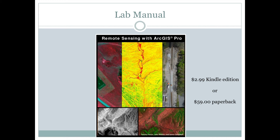If, however, you're comfortable working with a digital edition of this lab manual — which has the exact same material in it — a less expensive and easy way to access that is to go to Amazon.com and download a Kindle edition of this book for $2.99. It is your preference, but this manual includes very detailed instructions for how you'll work through the labs, and you'll definitely need it to successfully complete the lab for this class.